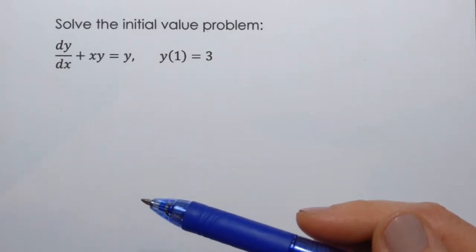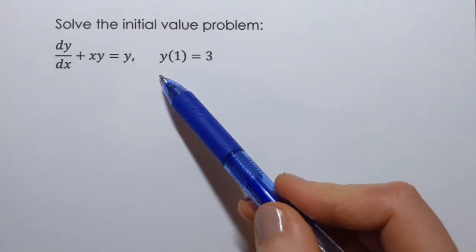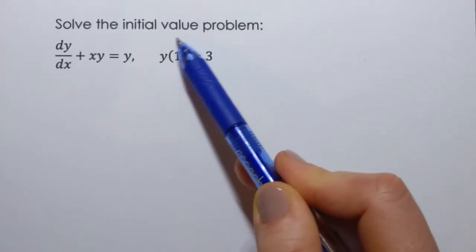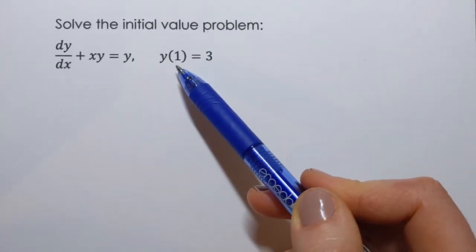So when we solve the initial value problem we're actually looking for one specific function from that family. We're looking for a particular solution, that's what it's called. What kind of function? Well functions that satisfies this condition. What is this condition?